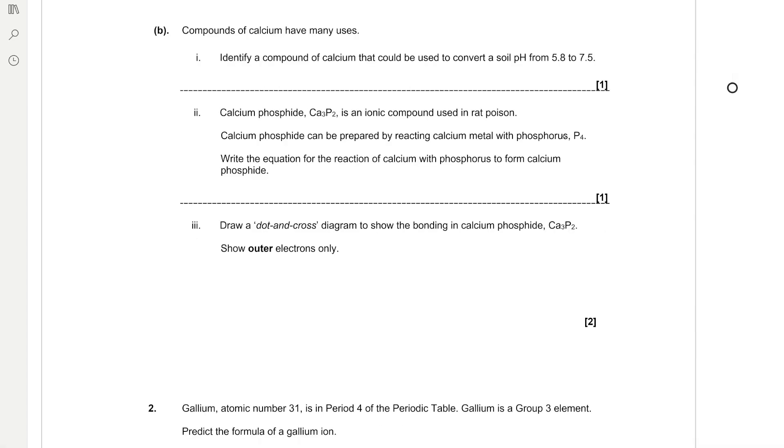Compounds of calcium have many uses. Identify a compound of calcium that could be used to convert a soil pH from 5.8 to 7.5. So when we want to neutralise acidic soils, we use calcium hydroxide which has the formula Ca(OH)2. Make sure to check out my video on group 2 metals in the top right hand corner to help you revise this topic.